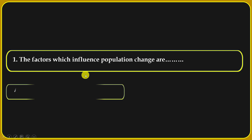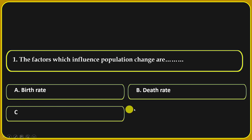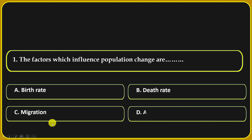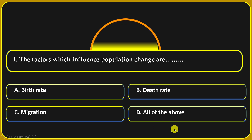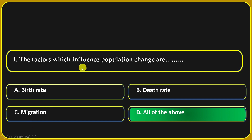The factors which influence population change are birth rate, death rate, migration, or all of the above. All of the above is the right answer. That means birth rate, death rate, and migration influence population change.